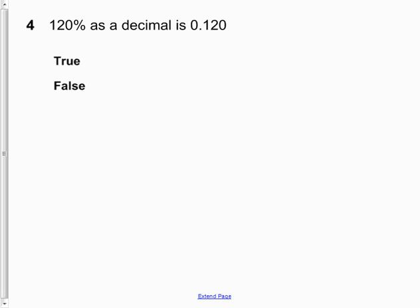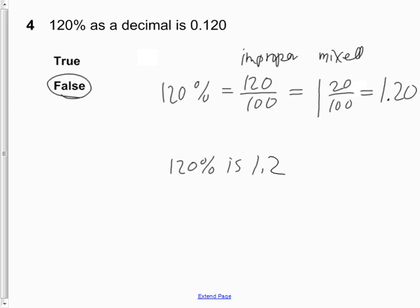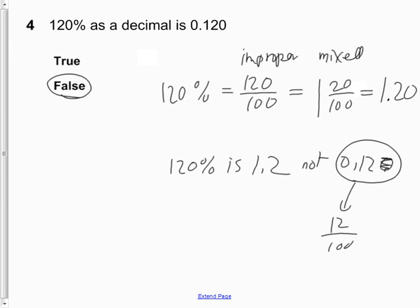Question 4: 120% as a decimal is 0.120. The answer is false. 120% is really the same as 120 out of 100, which is an improper fraction — a mixed fraction of 1 and 20 hundredths. As a decimal, that's 1.2, or 1 and 2 tenths. The value 0.120 is actually 12 hundredths, which equals 12%, not 120%.